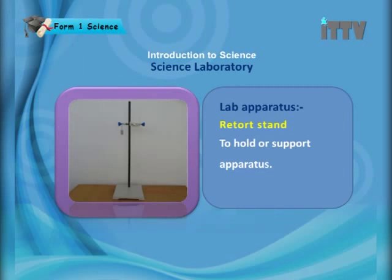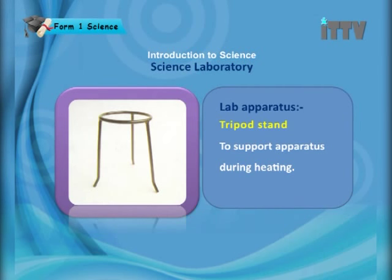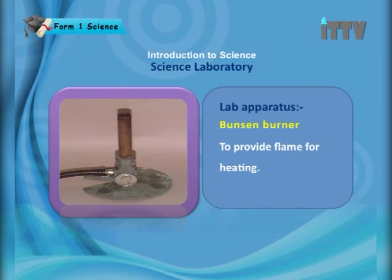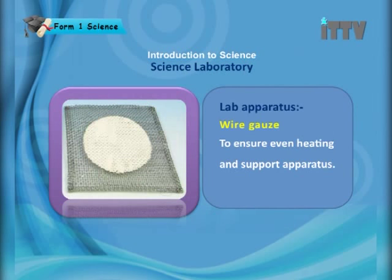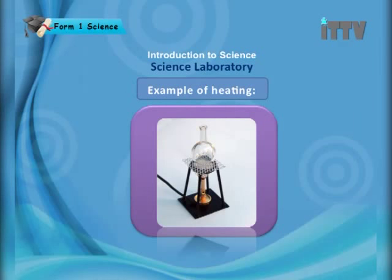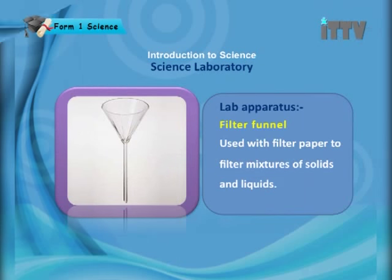A retort stand is used to hold or support apparatus. The tripod stand — the word 'tri' means three, so it has three legs — is used to support apparatus during heating. The Bunsen burner provides flame for heating. Wire gauze ensures even heating and supports apparatus. For example, when heating in the lab, you use the tripod stand, Bunsen burner, wire gauze, and a flat bottom flask together.